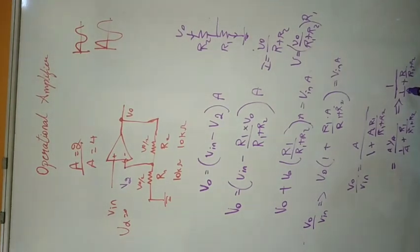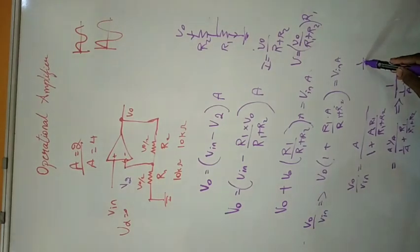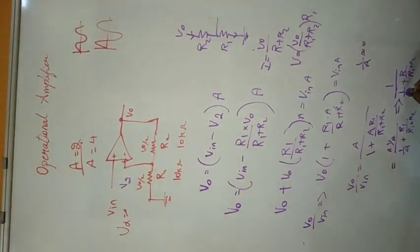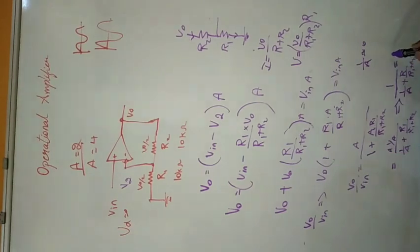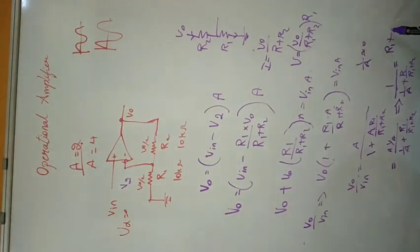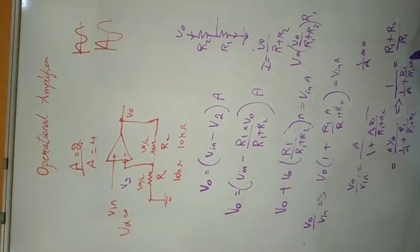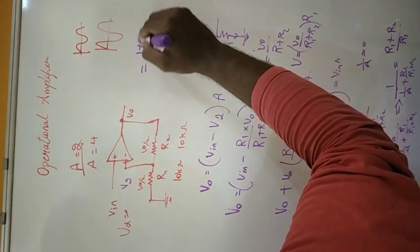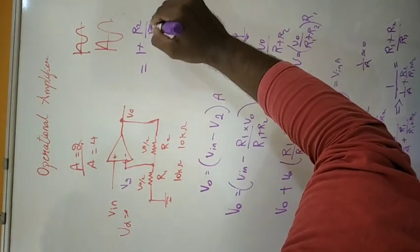Since we know that the gain of the amplifier is very large, 1/A is approximately equal to 0. So if we neglect 1/A, after simplification we get the gain as (R1 + R2)/R1, which equals 1 + R2/R1. This is the gain of the non-inverting amplifier.